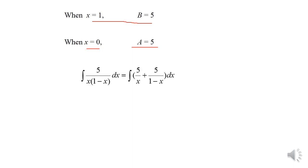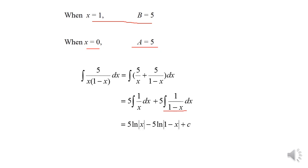Now we move to the actual integration. The integral of 5/[x(1−x)] dx equals the integral of 5/x plus 5/(1−x) dx. Taking out the factor of 5, this becomes 5 times the integral of 1/x dx plus 5 times the integral of 1/(1−x) dx, which gives 5 ln|x| − 5 ln|1−x| + c.